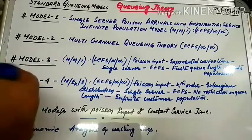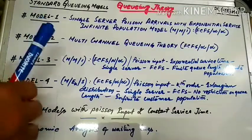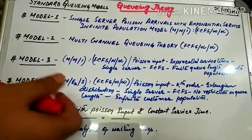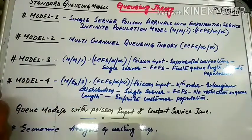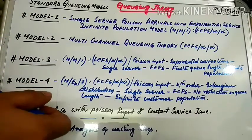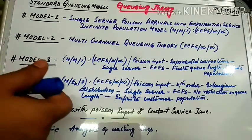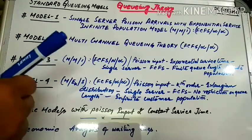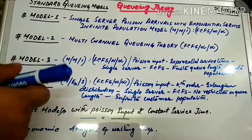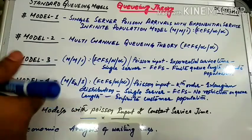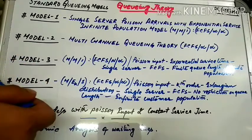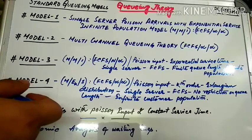Now we will run some standard queuing models. Earlier we completed the different terminologies associated with solving numericals — lambda, mu, waiting line, queue line, and many other things in the previous videos in the introduction part. So we already covered the introduction part of queuing theory. Now before entering directly to the numericals, let us know what models we are going to solve.